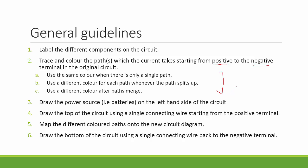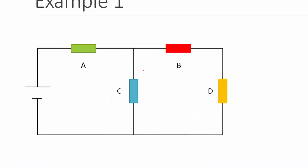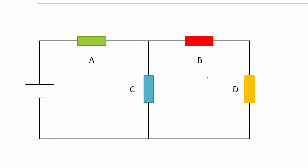Of course that is a mouthful to remember. I will use the previous example to help you see how it's done. So we have labeled the resistors A, B, C, and D.